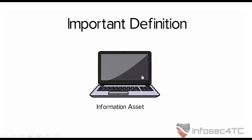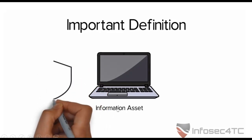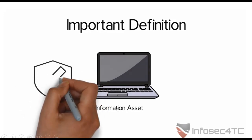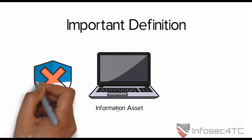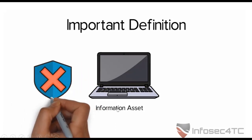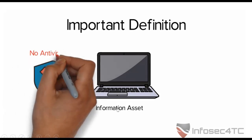Let's assume you have your own laptop where you keep all your private, personal, and financial information. For you, this laptop is quite important because it includes all your information — this is called an information asset. Now, assuming that this laptop doesn't have an antivirus on it, what do we call that?